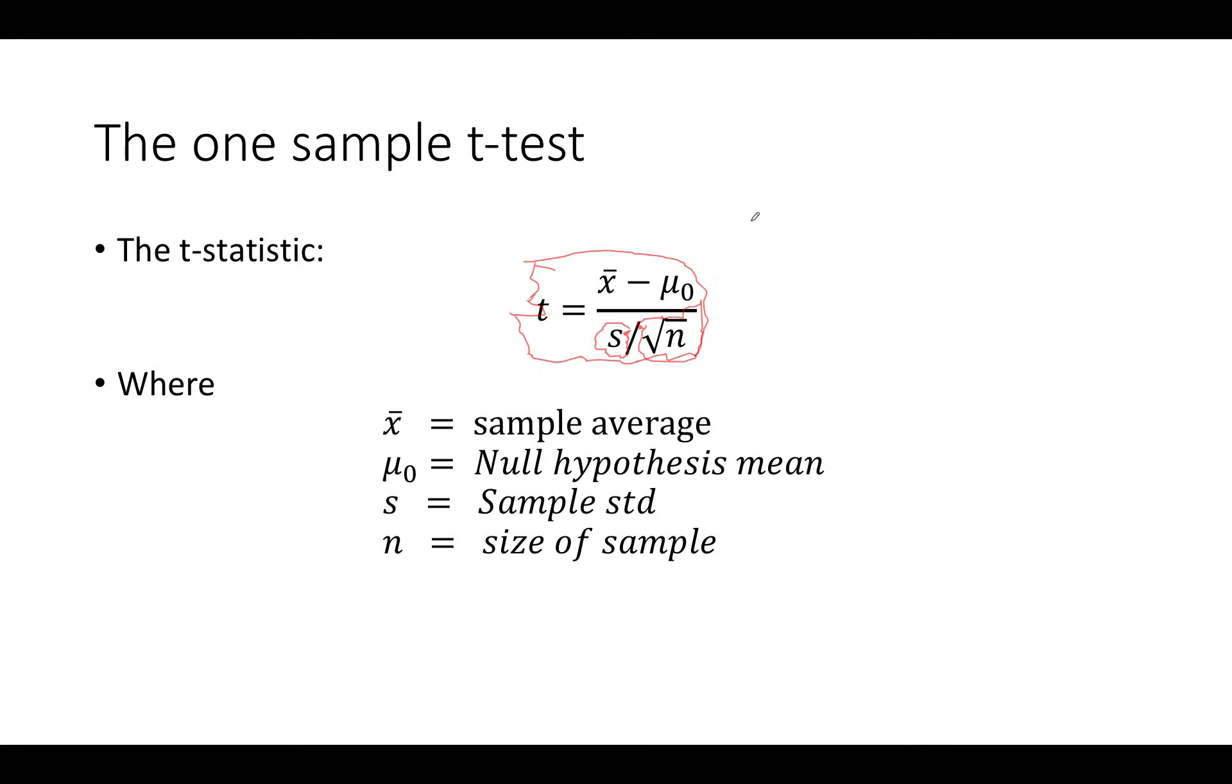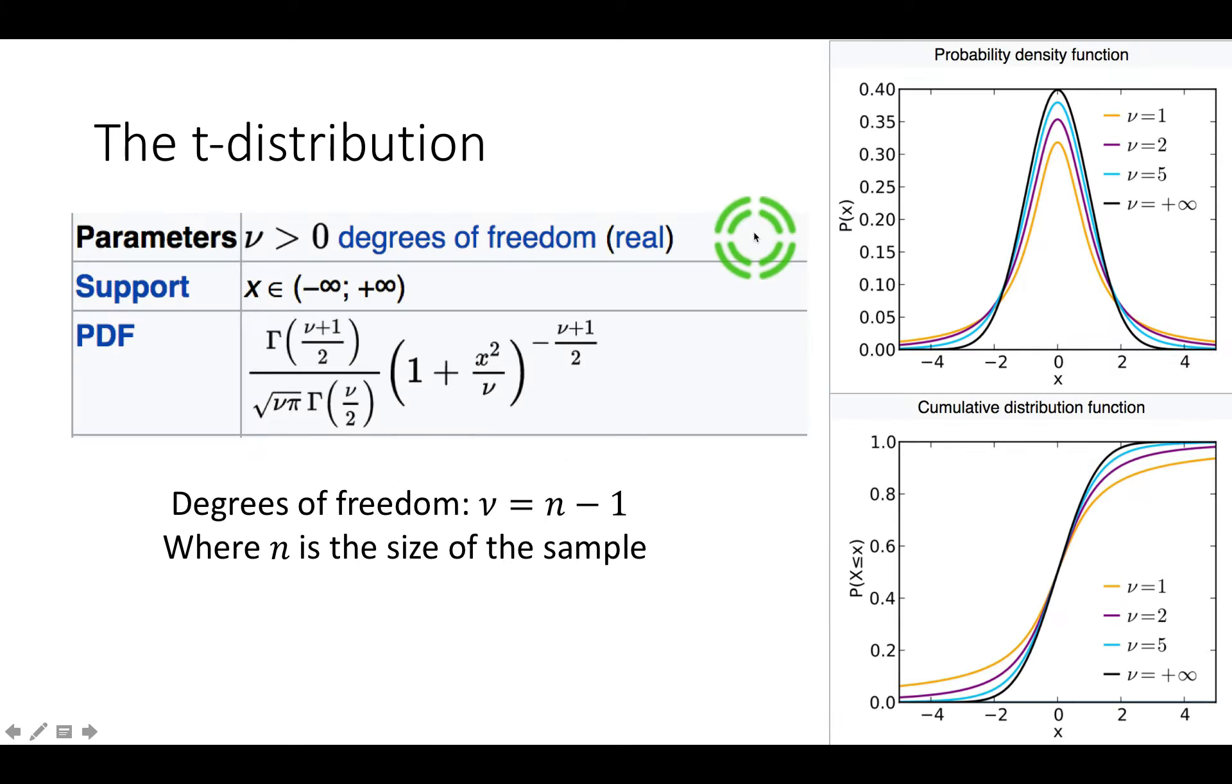Now to decide what is the p-value for the t-test we need to know what is the distribution of this t under the null hypothesis. So here it is that's called the t-distribution. It is basically very similar to the normal distribution but not quite.